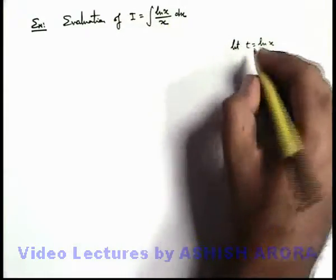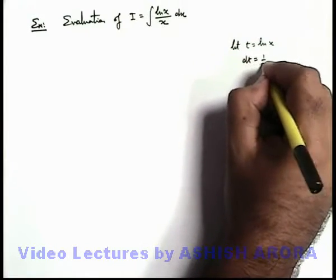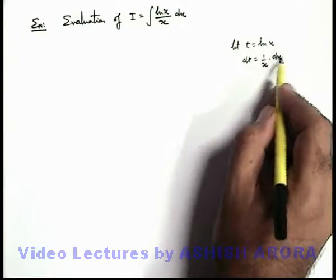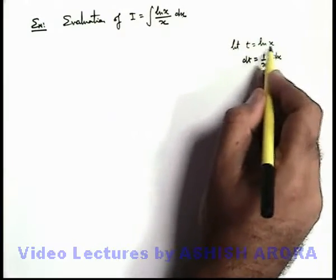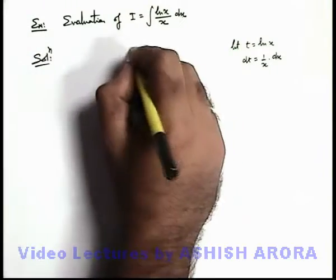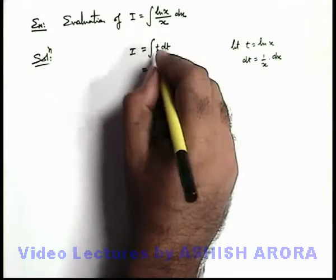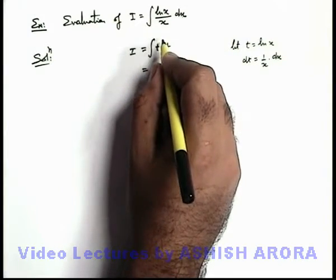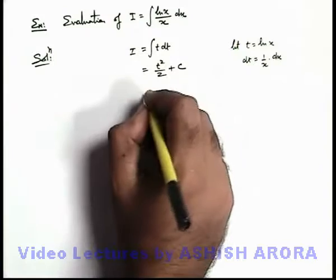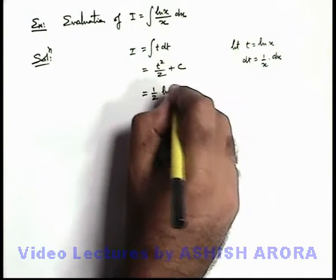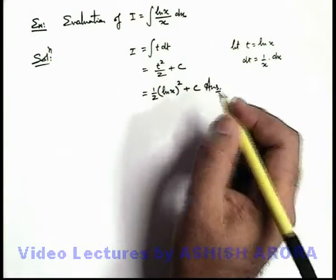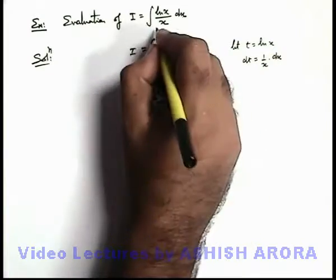We substitute ln(x) as t. Then its differentiation dt can be written as 1/x dx. Here 1/x dx can be written as dt, and ln(x) can be written as t. So this expression can be written as integration of t dt. Using the formula of x to power n, integration of t gives t²/2 plus c. If we put the value of t, it gives us (1/2)(ln x)² plus c. This is the answer to this question.